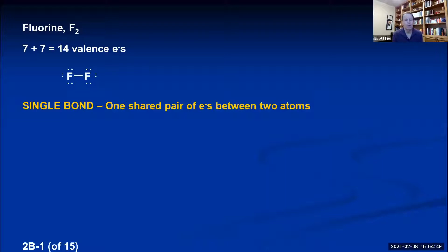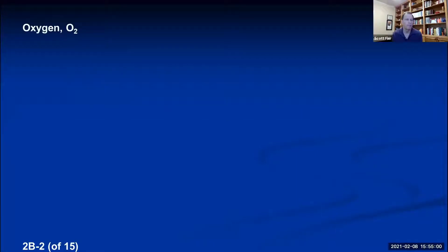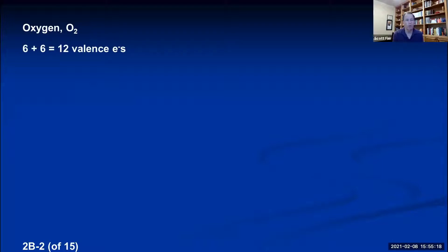Moving to oxygen, which is directly to the left of fluorine on the periodic table: elemental oxygen exists as O2 molecules. Oxygen is in the sixth tall column, so it has six valence electrons. With two oxygens in the molecule, 6 plus 6 is 12 — the diatomic oxygen molecule will have a total of 12 valence electrons.